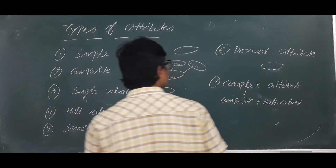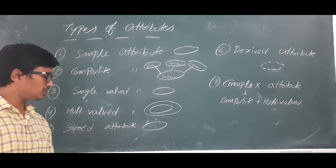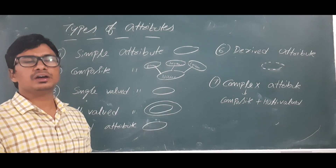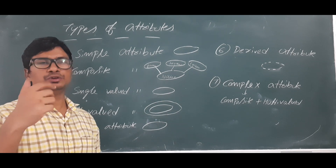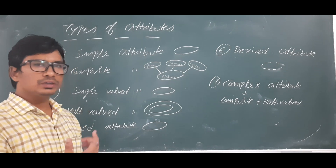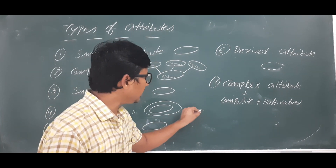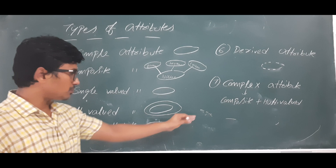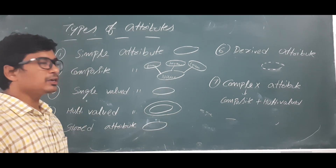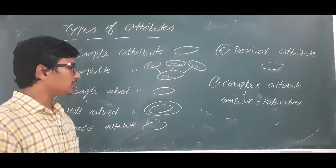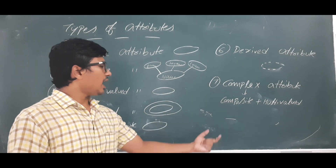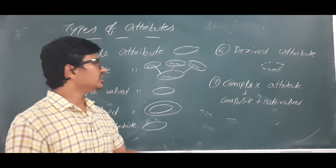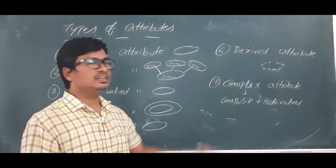There is a relation between stored attribute and derived attribute. For example, if someone knows my date of birth, can they derive my age? Yes. And if someone knows my age, can they derive my date of birth? Yes. So if I store my age, I can call age a stored attribute, and from the age I can derive the date of birth — so date of birth is a derived attribute.